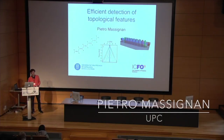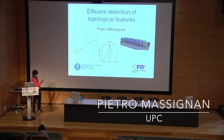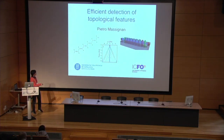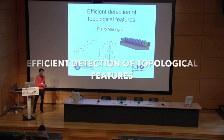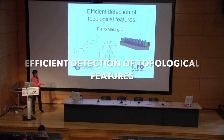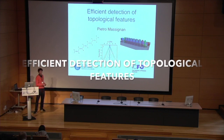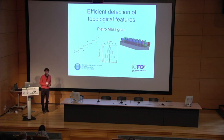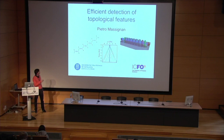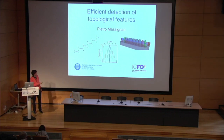Good morning, everybody. My name is Pietro Massignan. I'm from the Universidad Politecnica de Catalonia, UPC in Barcelona, and I'm also working at ICFO. Today I'd like to tell you about efficient detection of topological features in a variety of systems that could range from the SSH to some atomic systems to photonic systems.